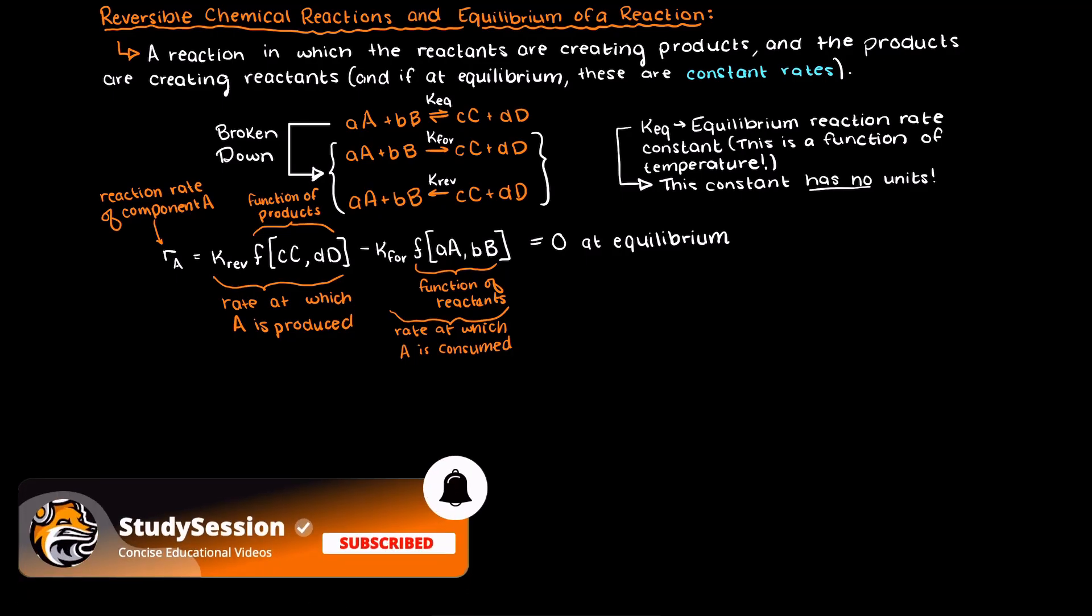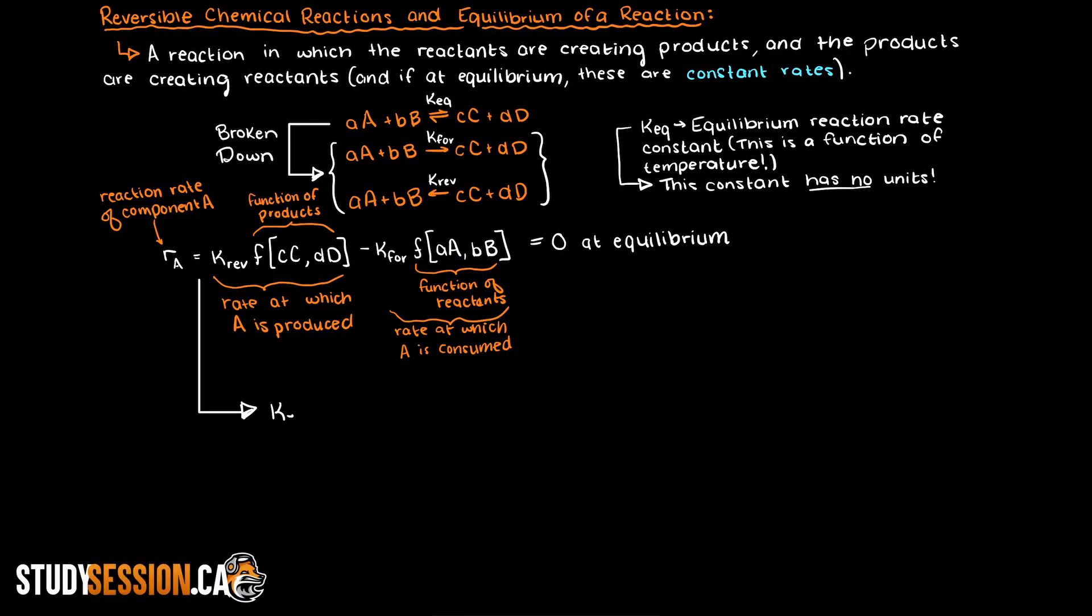This can be expressed using our equation from above like so, therefore we can find the equilibrium rate constant through a ratio of the concentration functions of the products to the reactants. We will talk more about the concentration functions of our other types of reactions in future videos.